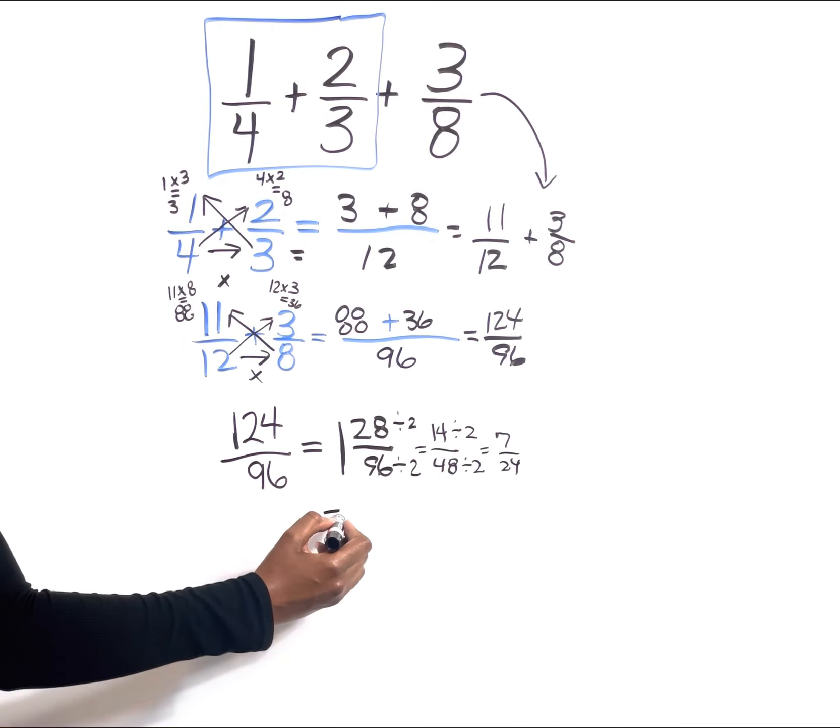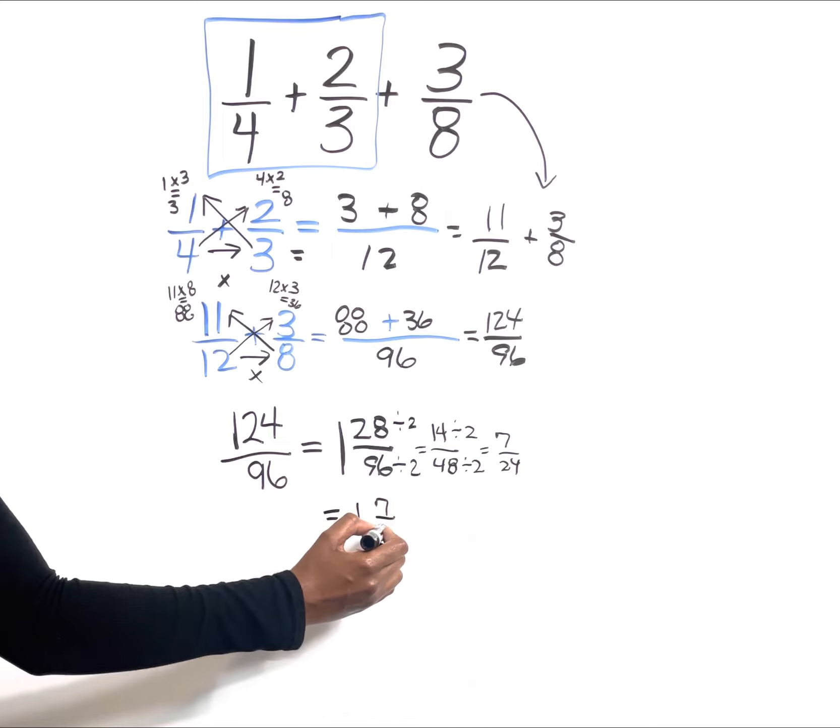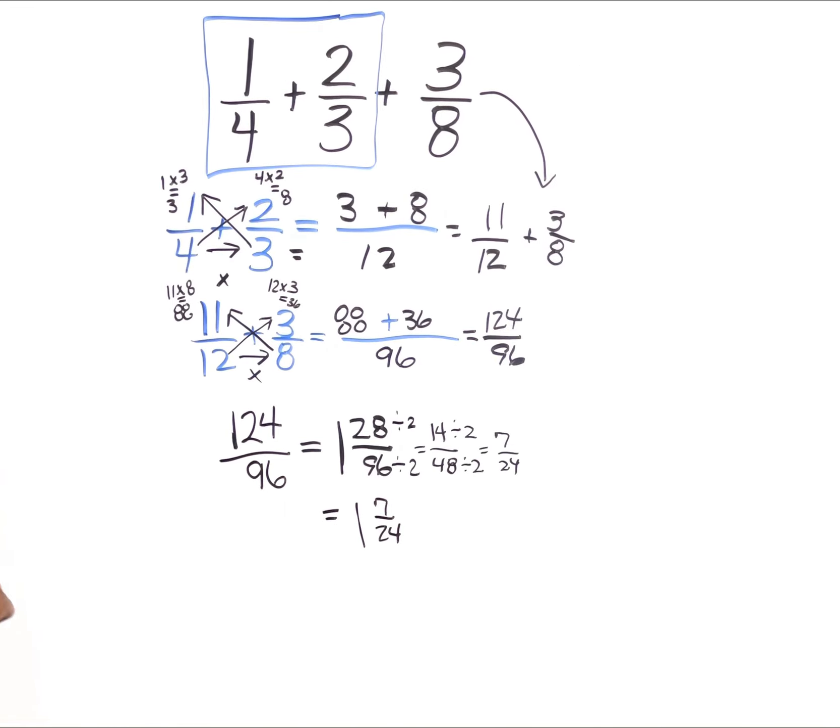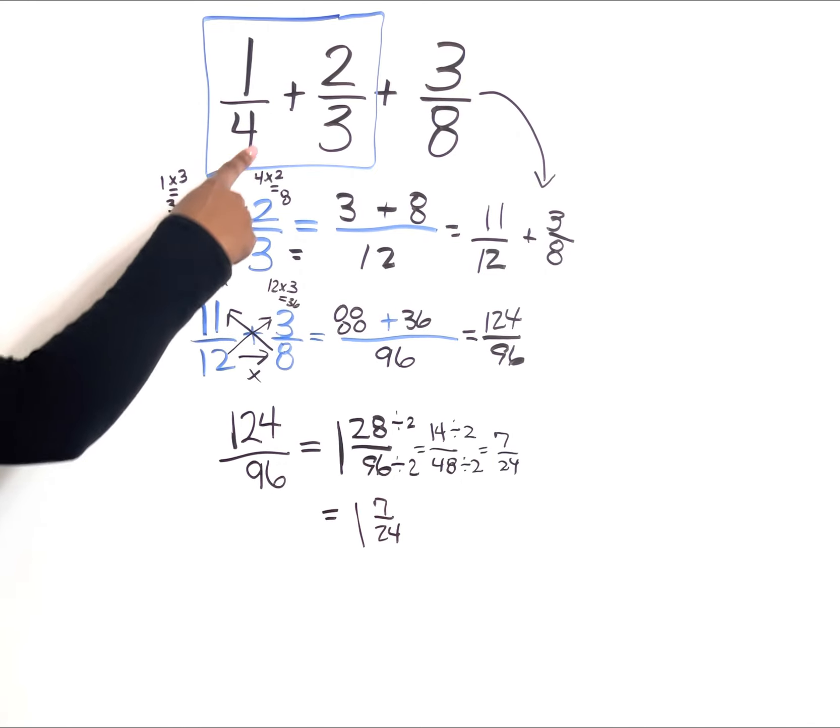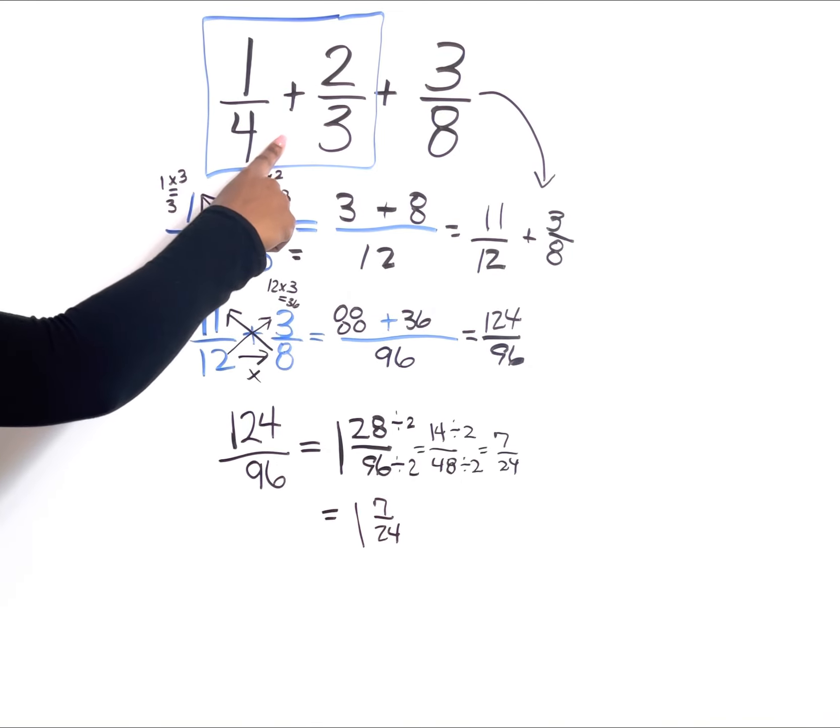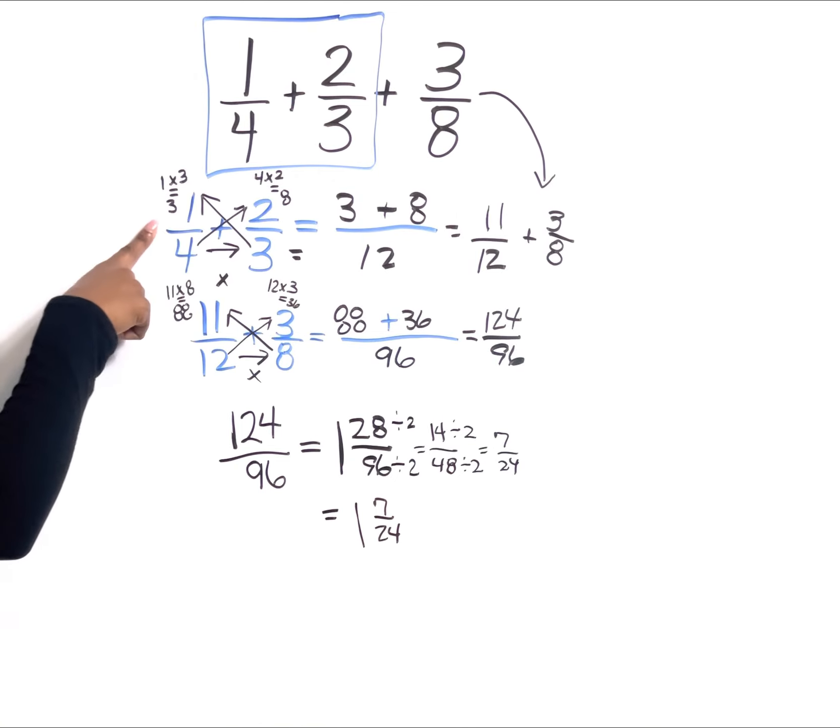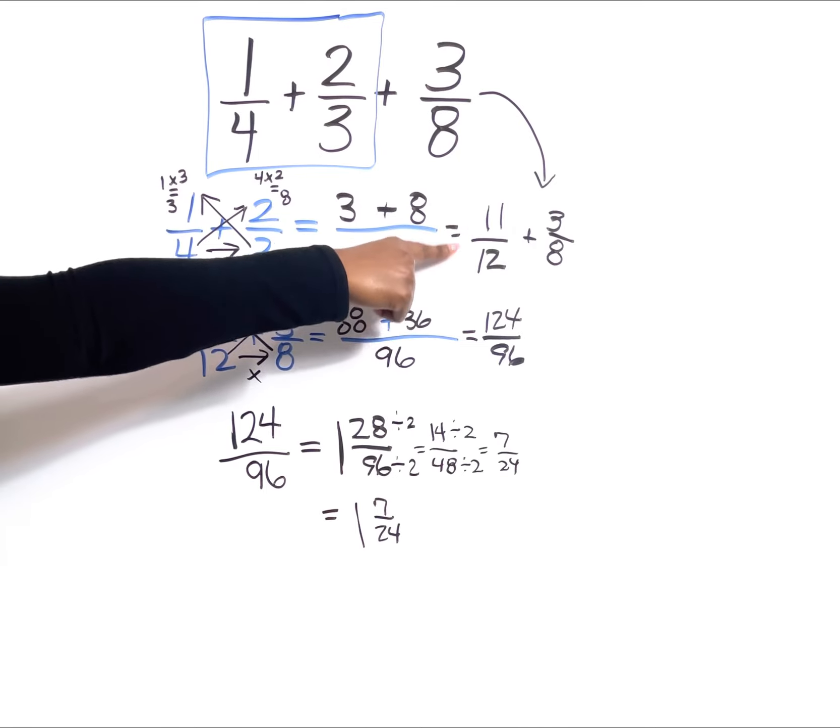So if we take a look at the question again from the top, anytime you perform operations with three or more fractions, you always want to do your math two fractions at a time, then just continue to combine until you get to your final answer. In this instance, because we had two addition signs, I just worked from left to right, combining 1/4 and 2/3 first using the butterfly method.